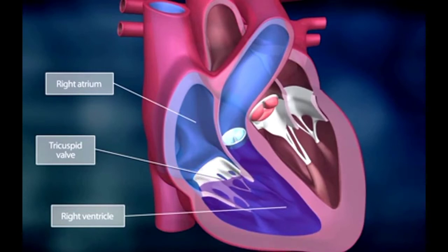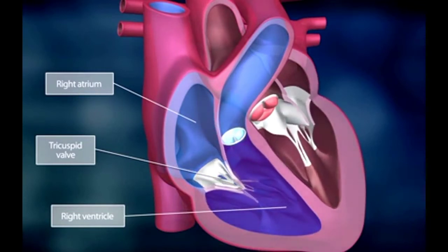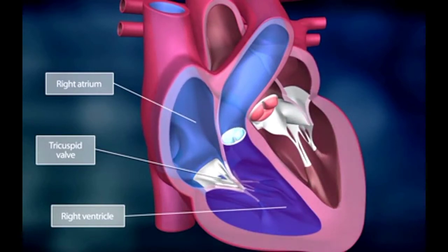When the right ventricle is filled, the tricuspid valve closes to prevent the back flow of blood into the right atrium.